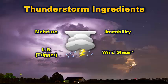There are three key ingredients for a thunderstorm to occur: moisture, a source of lift, and instability. A severe thunderstorm will need one additional ingredient, and that would be wind shear.